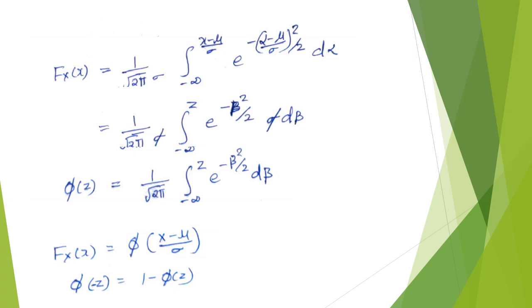So F_X(x) = phi(z) where z = (x - mu) / sigma. An important identity is: phi(-z) = 1 - phi(z). This is very important — whenever we want to calculate F_X(x), we convert x to z using z = (x - mu) / sigma. If z is negative, we use 1 - phi(|z|) to find the value from the table.